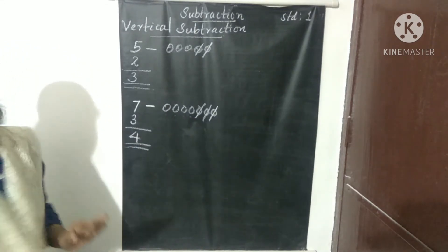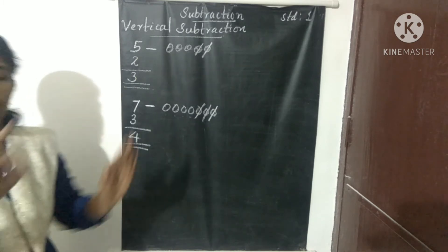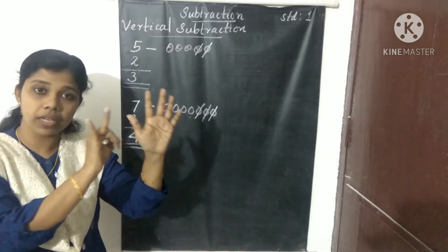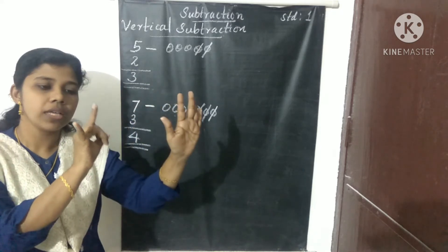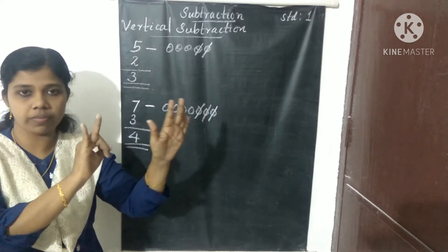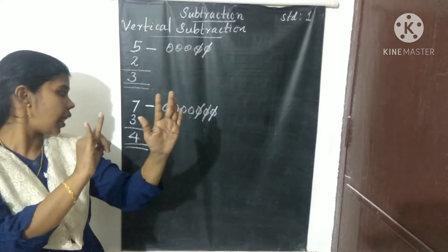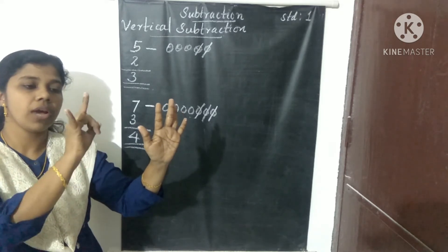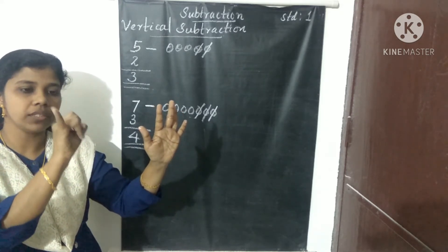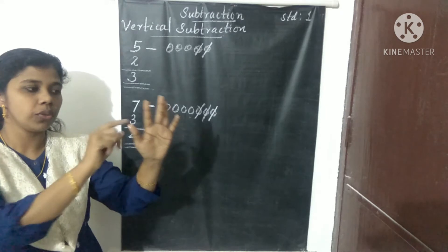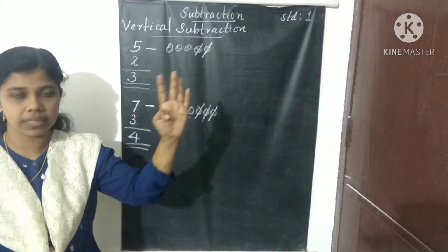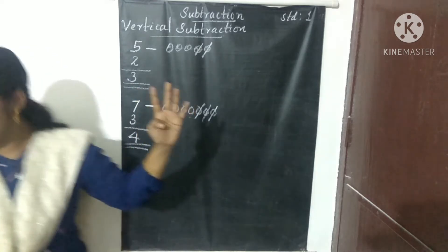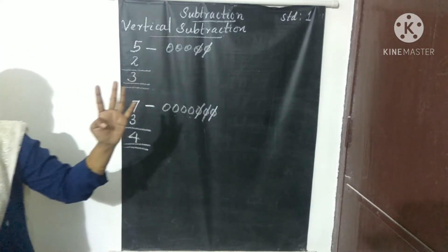Now let's use hands for 7 minus 3. Take 7 in your hands: 5, 6, 7 — that is 7 objects. Then take away 3 objects: 1, 2, 3. What is the balance? 1, 2, 3, 4 — the balance is 4.